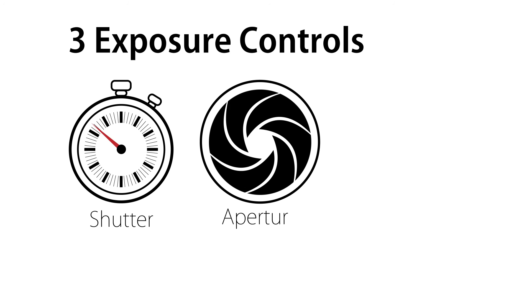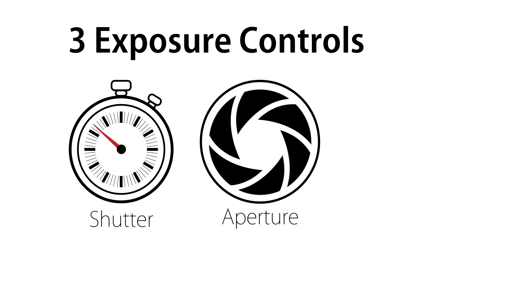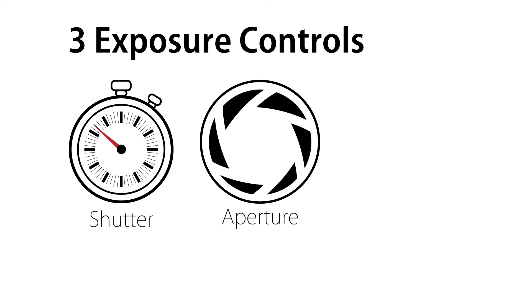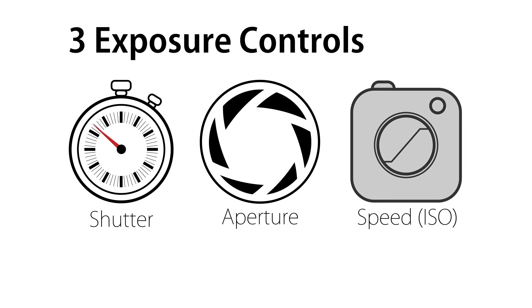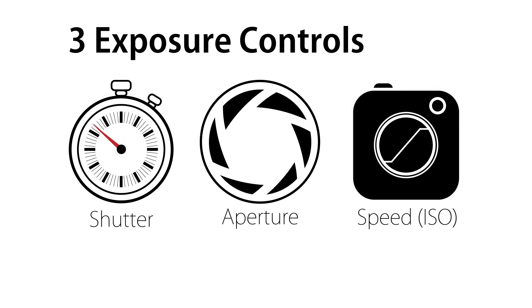The second is aperture, which is a measure of how much light is let through the lens at any one instant. And the third is ISO or speed, which is how sensitive the film or sensor is to light.